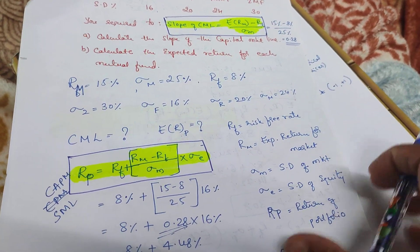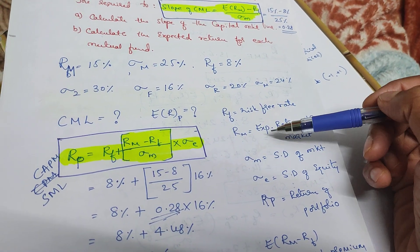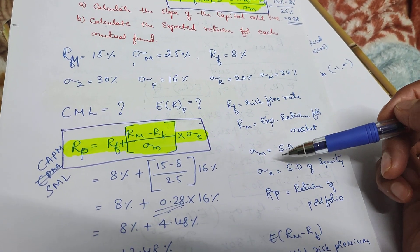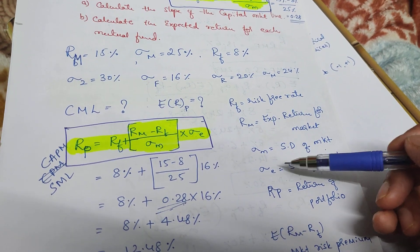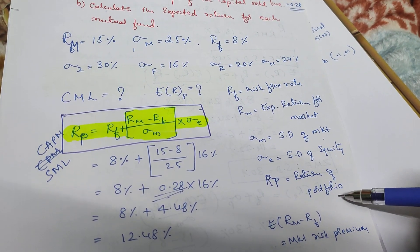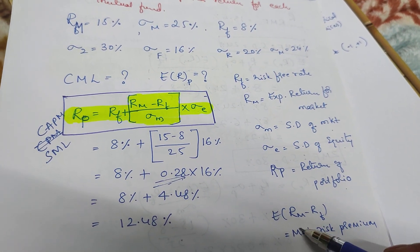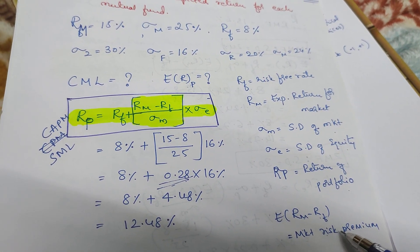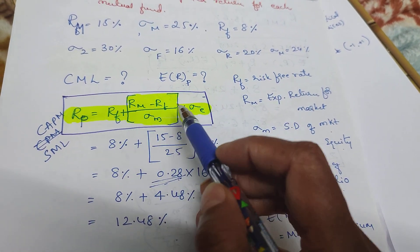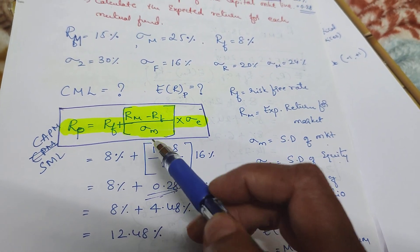Here, Rf is equal to the risk-free rate, RM is equal to the expected return for the market, we have the standard deviation of the market, standard deviation of the equity, and then the return of the portfolio. This portion represents the risk premium.